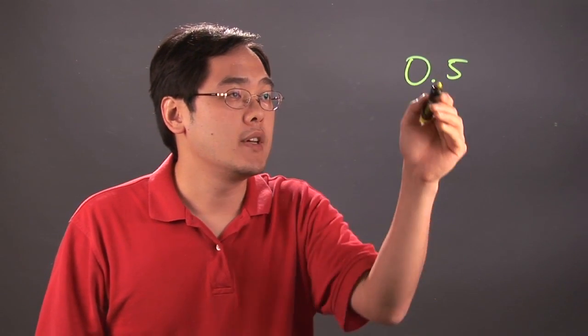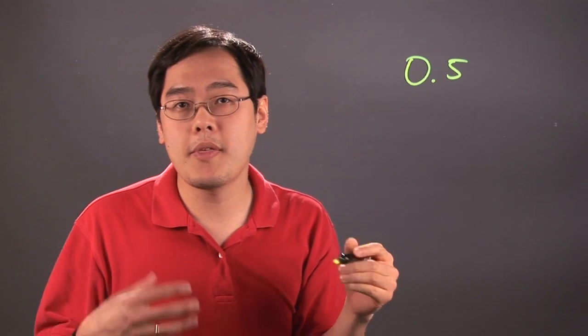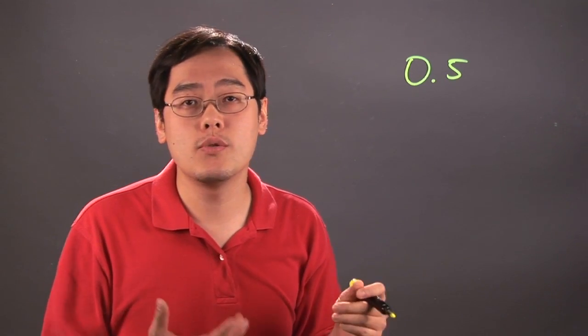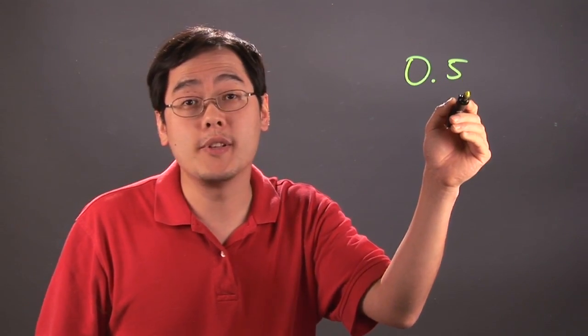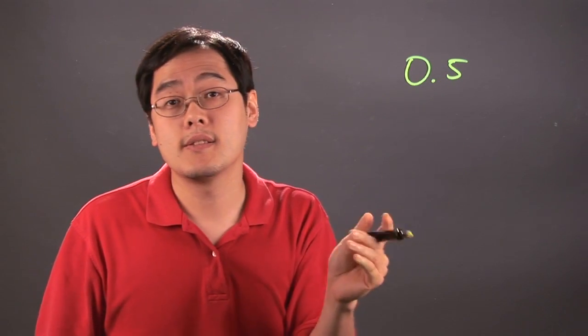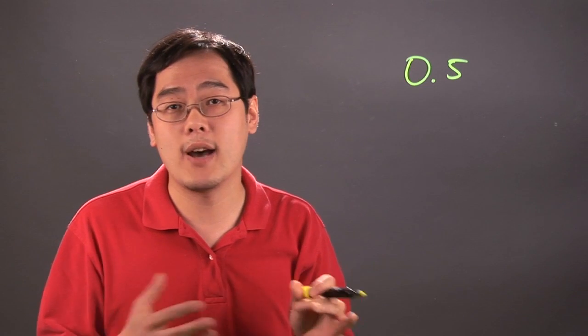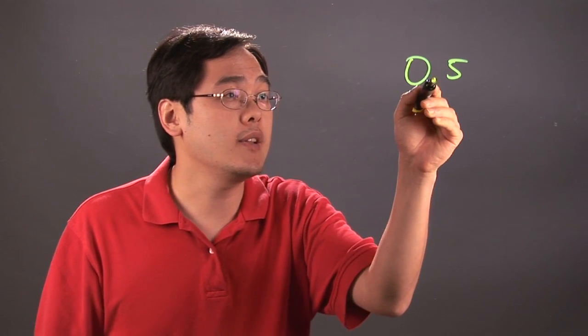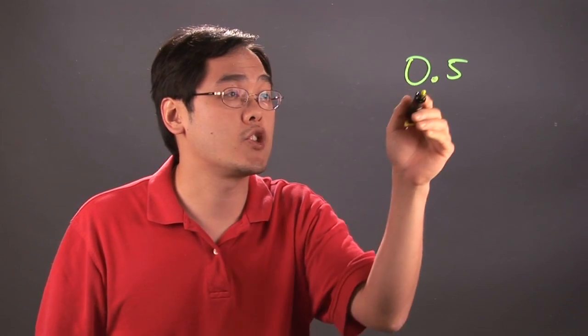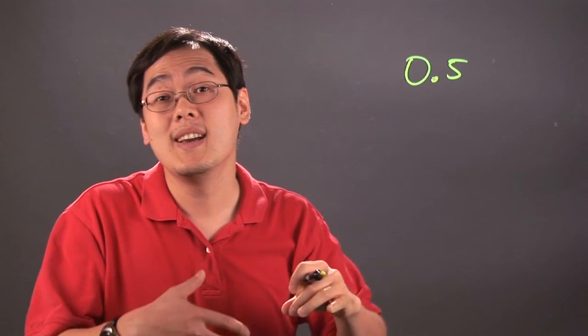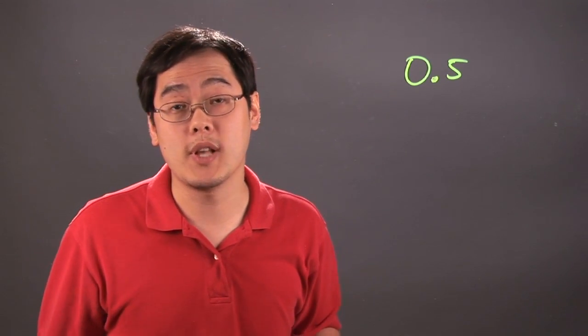When you round a number like this, the options are actually rather limited. With 5 tenths, you can't round to tens, hundreds, or thousands—that wouldn't make sense. In fact, the only place to round 5 tenths to would be the next whole number, which is the most logical.